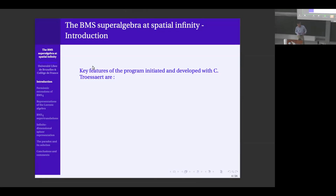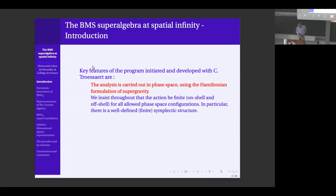The key features of the approach are that we carry the analysis in phase space using the Hamiltonian formulation of supergravity. We insist that the action be finite, so we will put boundary conditions on the fields — in the case of supergravity, the gravitational field and the gravitino field at spatial infinity. We insist that these boundary conditions be such that the action is finite, so in particular the kinetic term, which plays a key role in computing brackets of generators, is well defined.